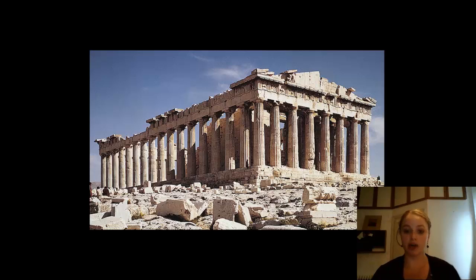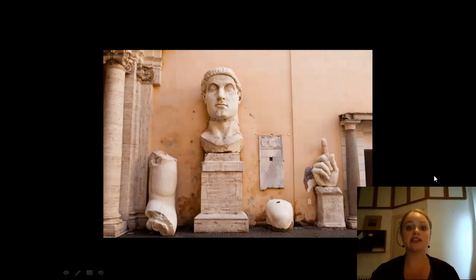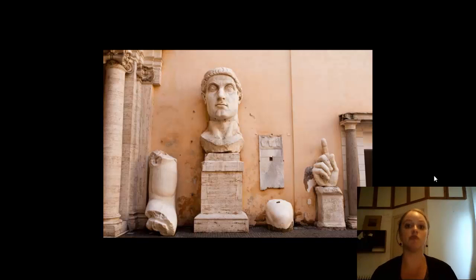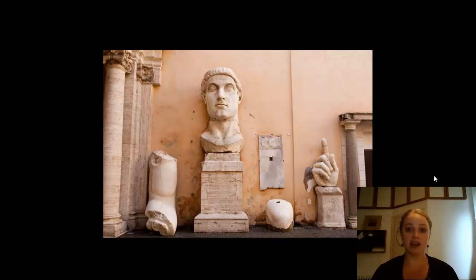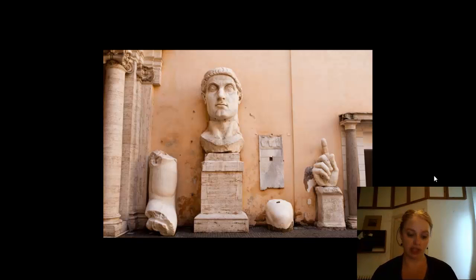Why do we look to Greek architecture and Greek sculpture as a paradigm for what art should look like? And why do our buildings still look like this today? That's something we'll be talking about. We'll also consider such things as this colossal statue of the Emperor Constantine. If you've been to Rome you might have seen this in the Capitoline Museums. Why is a head of an Emperor, his arm, his kneecap, and this hand so important? Why is it worth studying?